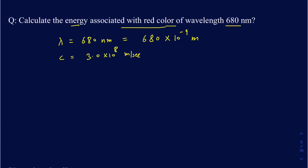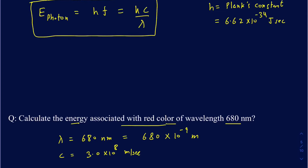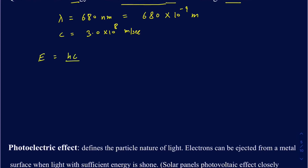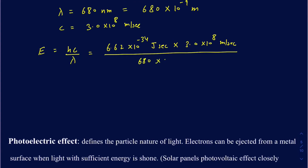To calculate the energy, since we're given the wavelength, I want to use E = hc over lambda. So h is 6.62 times 10 to the negative 34 joule-seconds, the speed of light is 3.0 times 10 to the 8 meters per second, and that's divided by the wavelength, which is 680 times 10 to the minus 9 meters. Plug those into the calculator — the meters cancel with meters and seconds cancel with seconds — so your answer will be in joules.